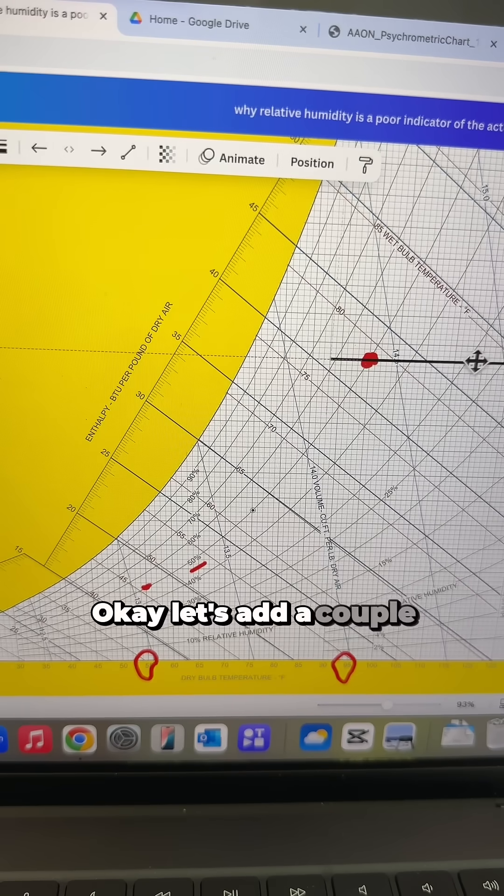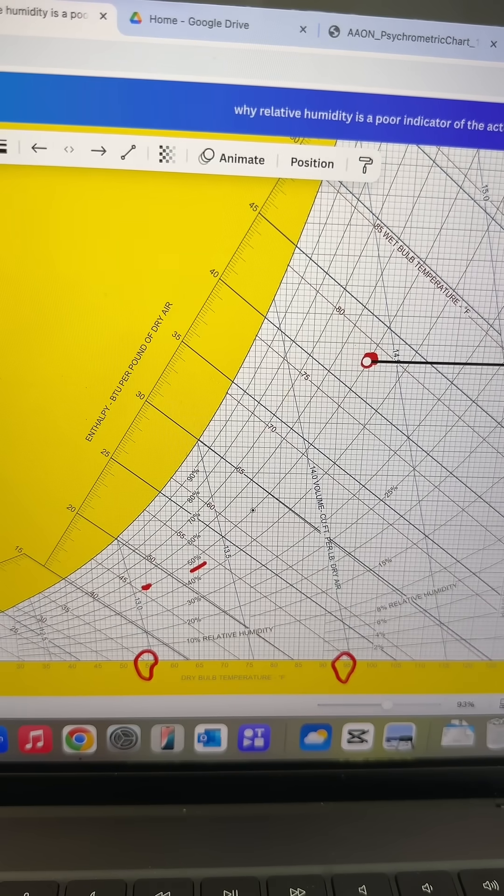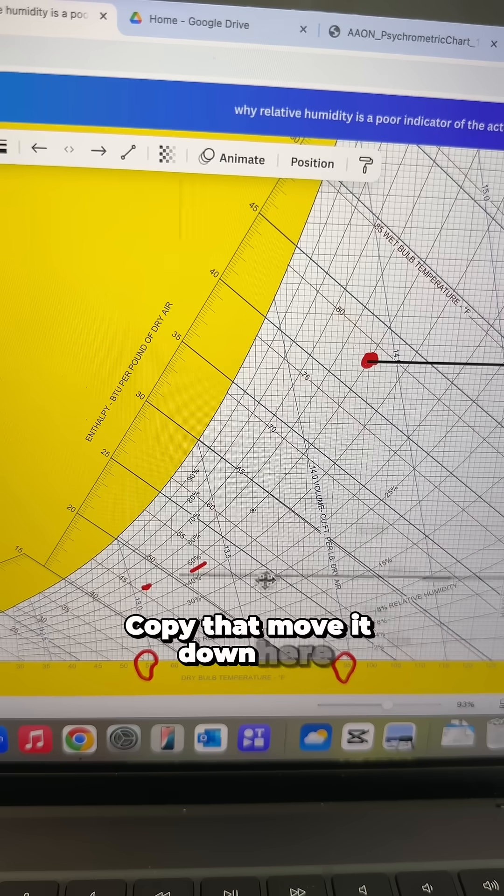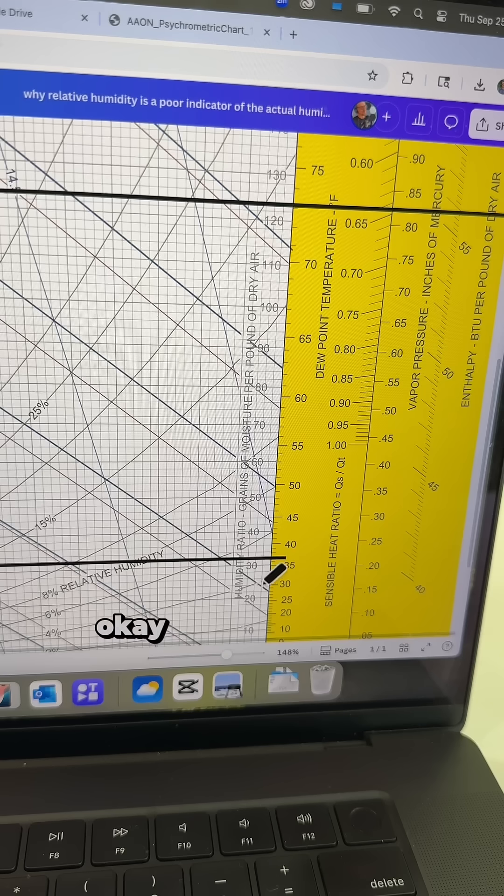Okay, let's add a couple horizontal lines to the right. Copy that, move it down here. Okay, okay.